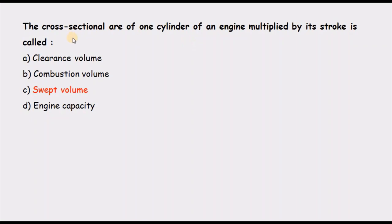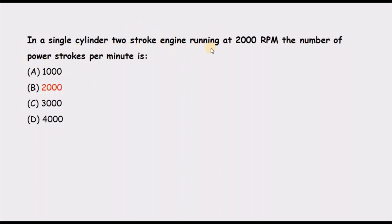The cross-sectional area of a cylinder multiplied by its stroke is called? The volume of a cylinder is found by area multiplied by length. The cross-sectional area of the cylinder multiplied by the stroke length gives the volume swept by the piston during its travel. This is called swept volume. Combustion volume, clearance volume, and engine capacity are not the correct answers. The correct answer is swept volume.